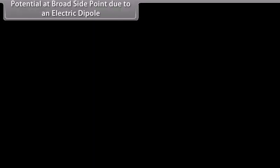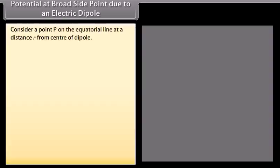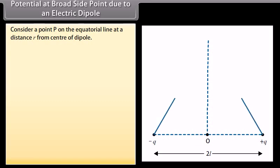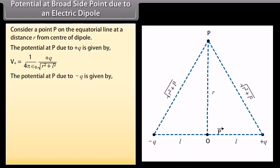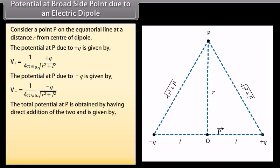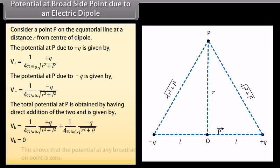Potential at a broadside point due to an electric dipole. Consider a point P on the equatorial line at a distance R from the center of the dipole. The potential at P due to plus Q is V_positive equals 1 over 4π ε₀ multiplied by Q over √(R² + L²). The total potential at P, V_B, equals zero. This shows that the potential at any broadside-on point is zero.